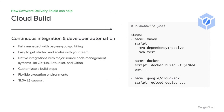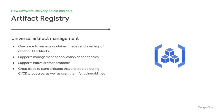Cloud Build also lets you create a pipeline with a simple build script, and as your needs evolve and become more complex, Cloud Build can handle that too. Next, Artifact Registry is a universal management layer for images, build artifacts, and application dependencies. Not only does it let you store these artifacts, but it does so with high availability. Artifact Registry supports a variety of languages and native artifact protocols. You can also scan these images and artifacts for vulnerabilities.